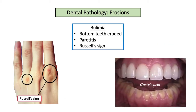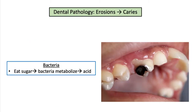In tooth erosion due to bulimia, the bottom teeth are often more eroded than the top, as acid pools in the lower mouth. Inflammatory parotitis accompanies this condition and the patient may be reported with Russell's sign — calluses on the back of the hand from self-induced vomiting.